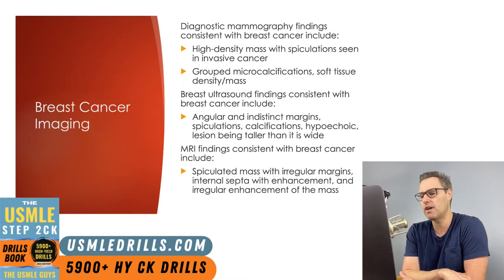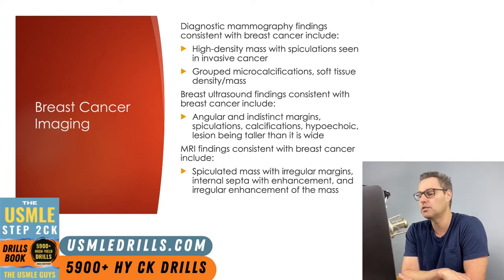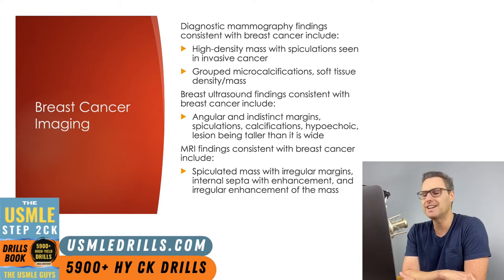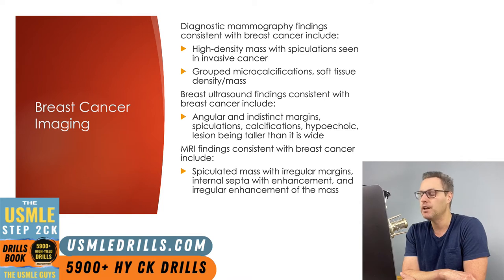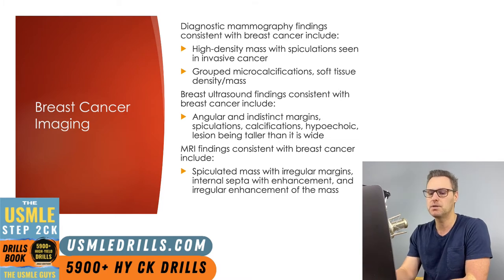The imaging used to identify possible breast cancer will include diagnostic mammography. On diagnostic mammography, signs consistent with breast cancer include the presence of a soft tissue density or mass with grouped microcalcifications, and in advanced or invasive disease, a high-density mass with spiculations. On breast ultrasound, findings consistent with breast cancer include angular and indistinct margins, spiculations, calcifications, hypoechoic characteristics, and a lesion that is taller than it is wide. MRI is used for screening in patients with an elevated risk of breast cancer, and findings consistent with breast cancer include a spiculated mass with irregular margins, internal septum with enhancement, and irregular enhancement of the breast mass.